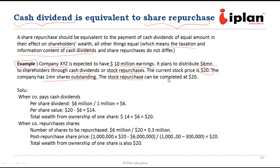The assumption is that stock repurchase can be completed at the current price of $20. In the first case where the company pays cash dividend: from $10 million in earnings it plans to distribute $6 million. Dividend per share will be $6 million divided by 1 million shares, which is $6 per share. After the ex-dividend date, the share price will be reduced by the same amount, giving a new share price of $14. So total wealth for a shareholder will be $14 plus $6 dividend, which nets to $20 — the same as before.